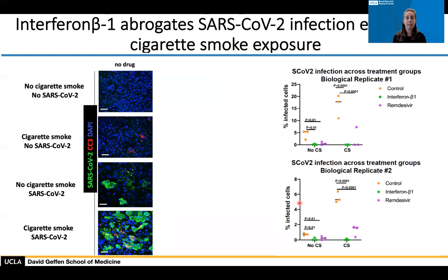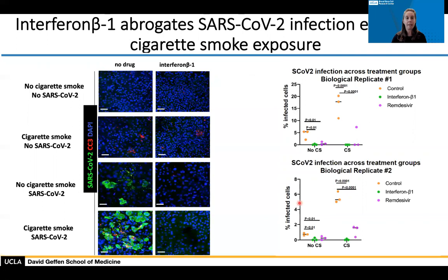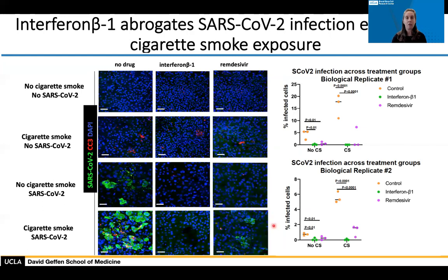To examine this mechanistically, we used the same four treatment groups and looked at the effect of adding interferon beta. We added interferon beta to the cultures after cigarette smoking but before viral infection. Even in the setting of cigarette smoke with SARS-CoV-2, where we normally see many infected cells, we completely abrogated the infection. This contrasts with remdesivir used as a control, which gave a great reduction in infected cells, but the effect was even greater with interferon beta. This is quantified for two biological replicates on the right.